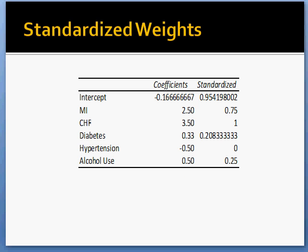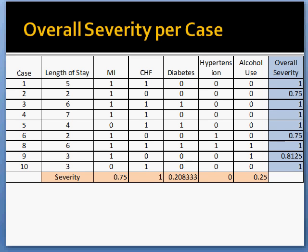I used the indicators assigned to the cases per disease and length of stay to do a regression analysis in Excel. After finding the coefficients, I standardized these values to range from zero to one. One indicates the most severe disease in the dataset, which is congestive heart failure. These standardized weights are added onto the dataset in this slide in the bottom in pink.